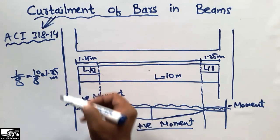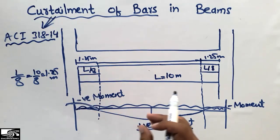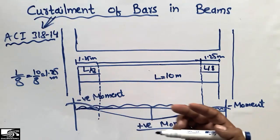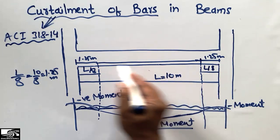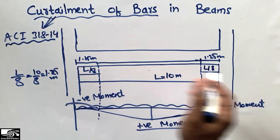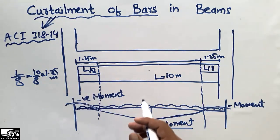Note that two main bars to hold the stirrups should be placed along the full length of the beam.